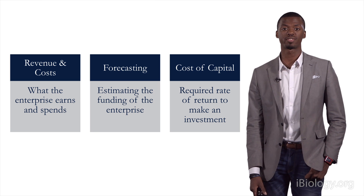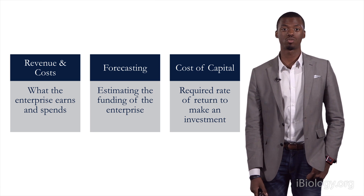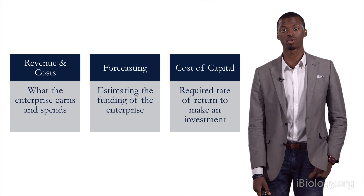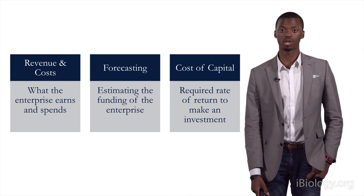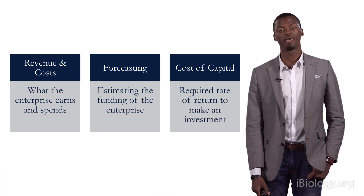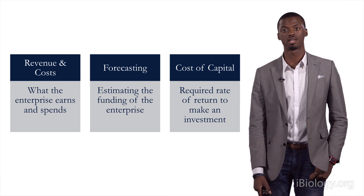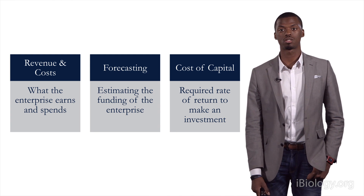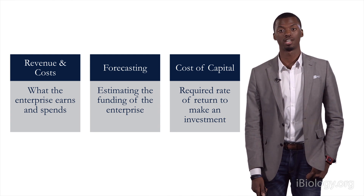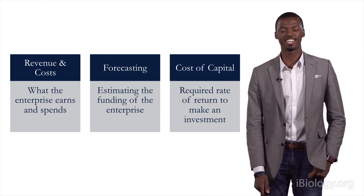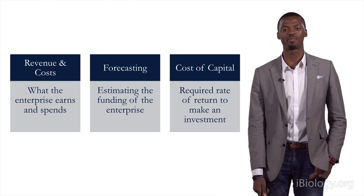We're going to talk about three different categories today. The first category is revenues and costs — what the enterprise earns and spends. The second is forecasting, where we estimate the funding of an enterprise. And then cost of capital is the required rate of return to make an investment. It sounds a little jargony right now, but you'll understand exactly what we're talking about by the end of this.